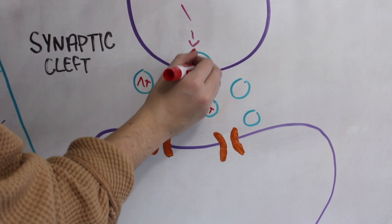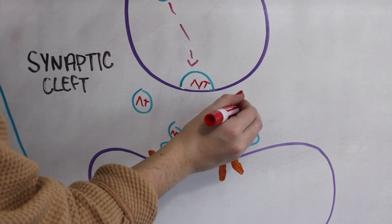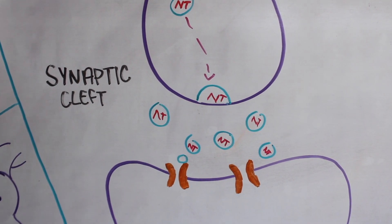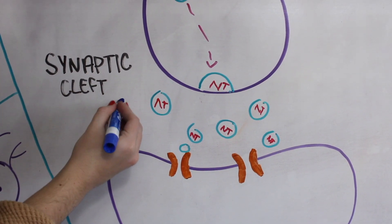The next step of neurotransmission that we will cover is called receptor. After being released into the synaptic cleft, neurotransmitters are able to bind to different types of receptors on the postsynaptic neuron.